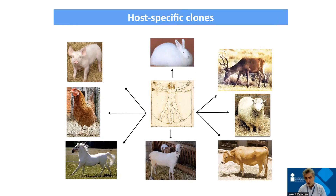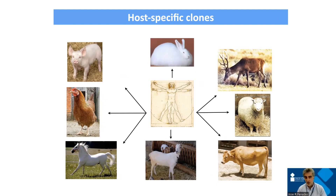Staphylococcus aureus was assumed to be a human pathogen originally. When I was in veterinary school, we thought it was some kind of zoonotic pathogen that could jump from humans to animals and vice versa. But what we know now is that S. aureus is a human pathogen originally, and from humans it jumps to different animals. Once in the new host, staff adapts pretty well to that host, but not to others.